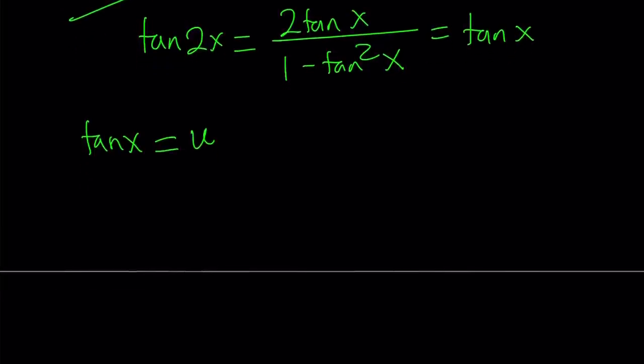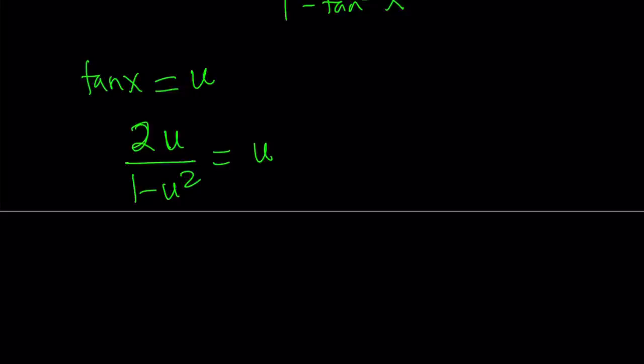So let's set tangent x equal to u. Okay, from here we get the following: 2u divided by 1 minus u squared equals u. And now let's cross multiply this equation. And from here we get 2u equals u minus u cubed.